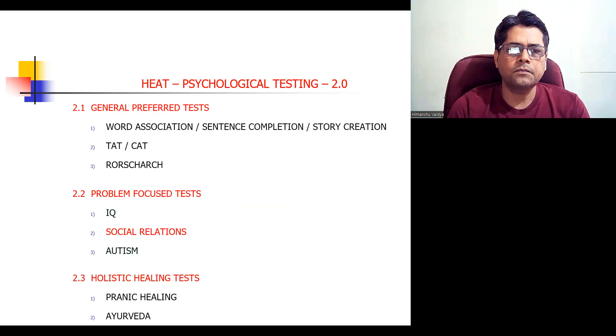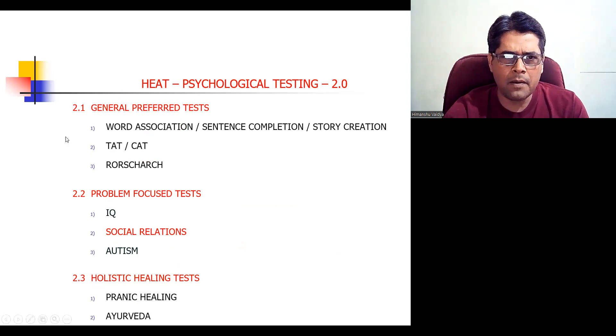Second part, psychological testing. Here, three tests are very important for us. All of these are projection tests: word association, sentence completion, story creation. If possible, go for story creation. If not possible, come to sentence completion. If not possible, word association. TAT or CAT. And if psychosis is suspected or is clear, then maybe Rorschach. In case of personality disorder also, Rorschach can be used.